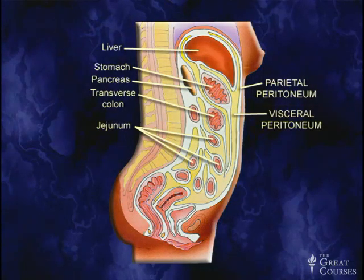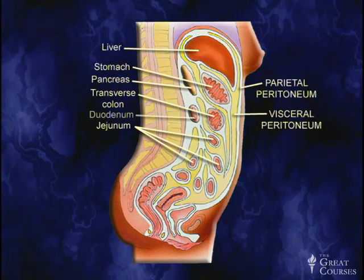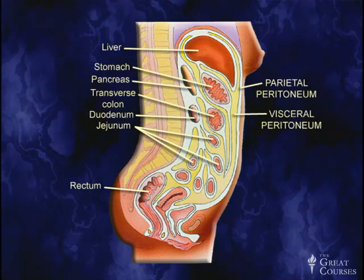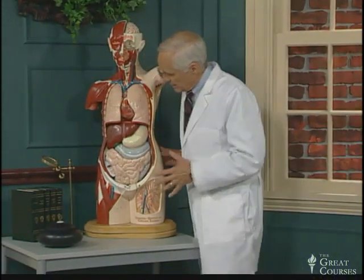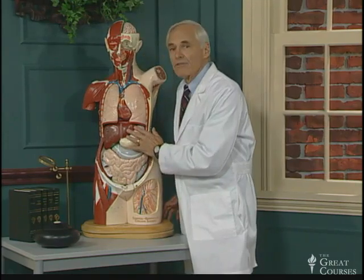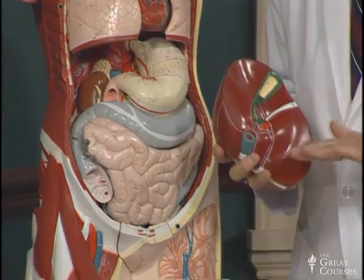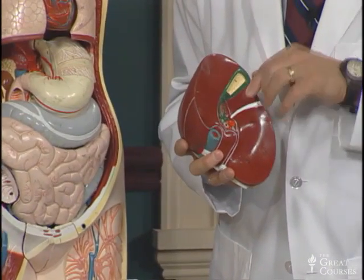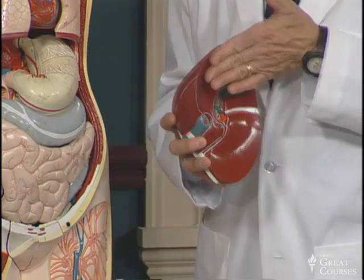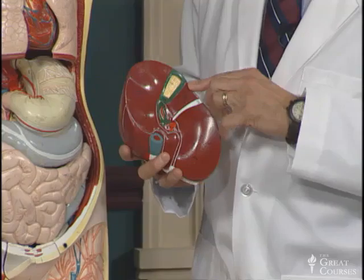Organs behind the peritoneum include the pancreas, which is behind the peritoneum covering the back wall, and also the kidneys. The middle portion of the duodenum is considered extraperitoneal, as is the rectum. This is important because diseases that affect them are different from diseases that affect intraperitoneal organs. Looking at this model, you can see how the liver would be covered with peritoneum, and the gallbladder would get caught up in that covering. When the visceral peritoneum comes to the edge of the gallbladder, it doesn't go behind it — it goes right over it. We're going to see that live in a movie of a gallbladder removal.